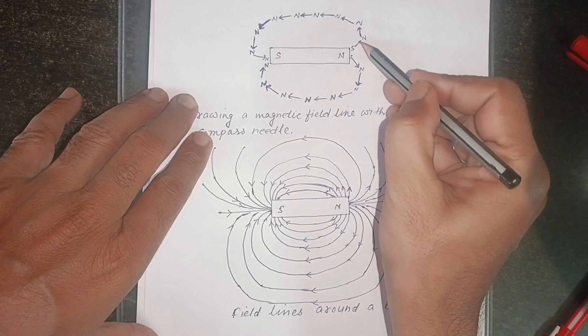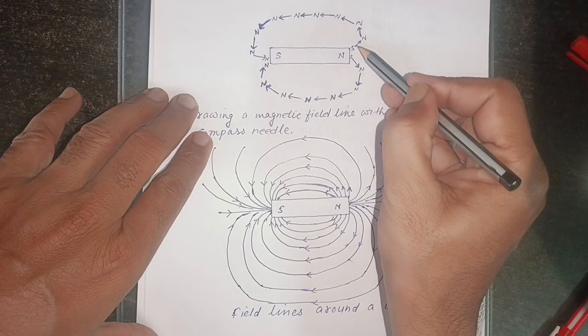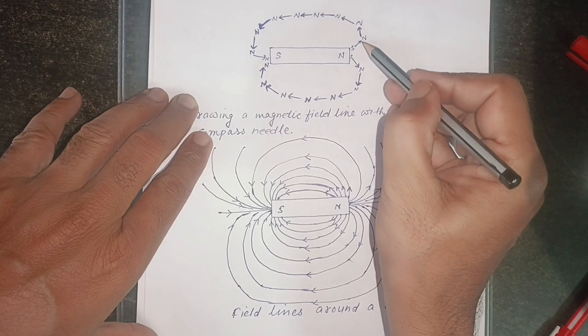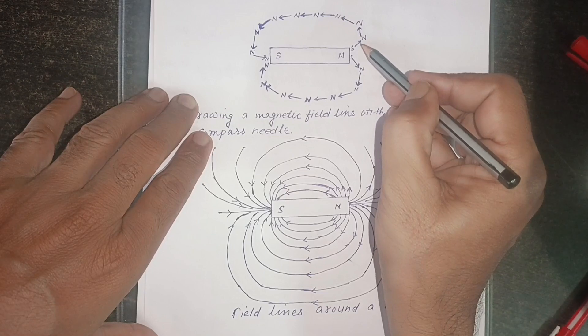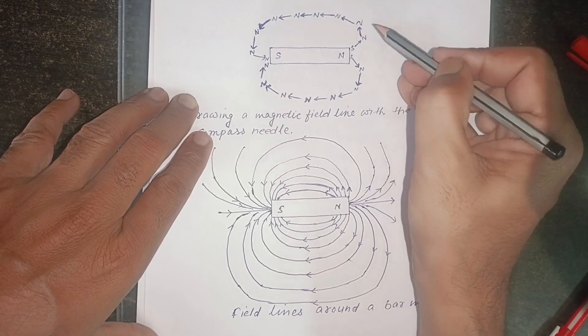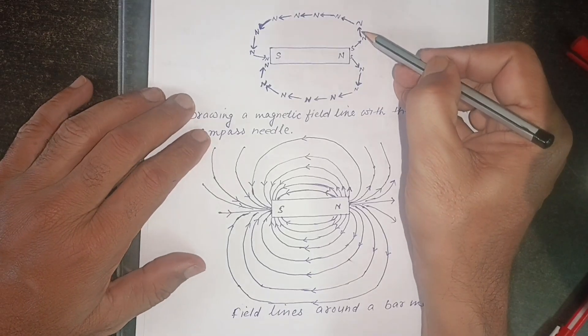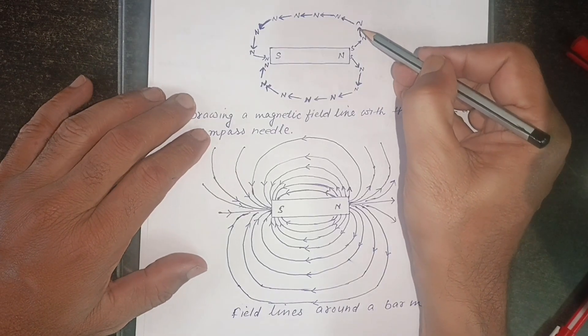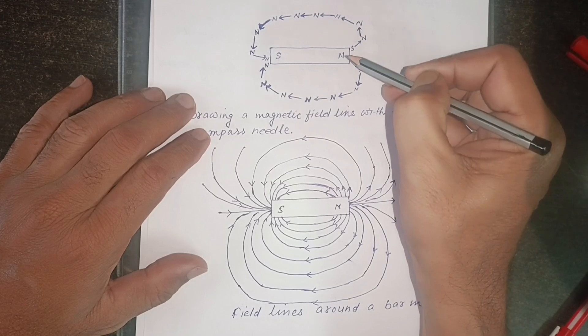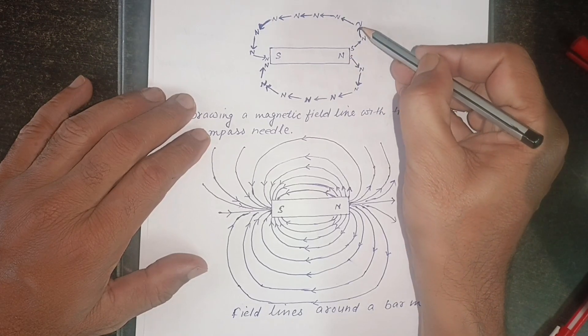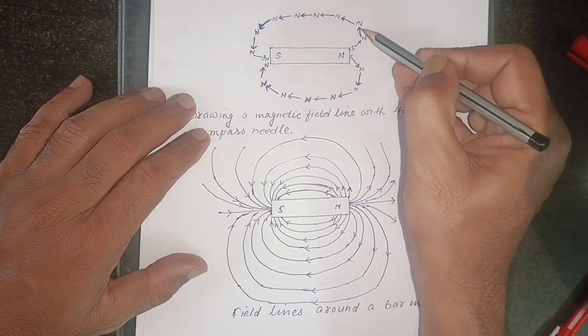Mark the position of the compass. Now remove the compass and take it to the new position. Again, the south pole of the compass will be towards north pole of the magnet and north pole of the compass will be away from north pole of the magnet.